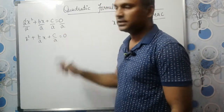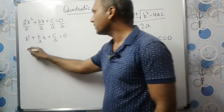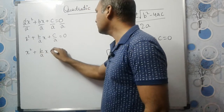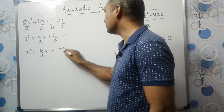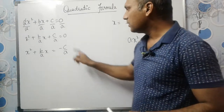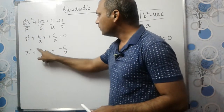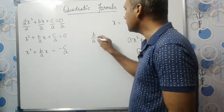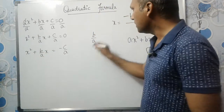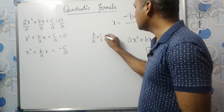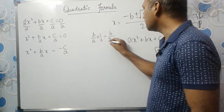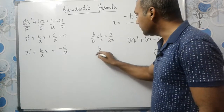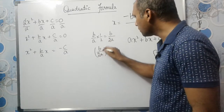Now I should send the constant term to the other side, as we did in completing the square. So we have x squared plus b by a times x is equal to minus c by a. Now we take the coefficient of x, which is b by a, and multiply it by 1 by 2. That gives us b by 2a. We should add b by 2a whole squared to both sides.